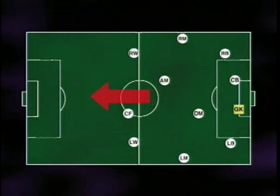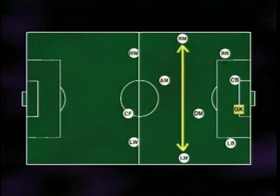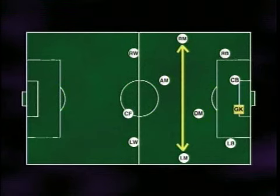As you come out of your defensive half, we're selecting in our system to have our width in midfield. There are a lot of reasons for this. One reason is we certainly want width in one of our lines to spread out the opponents so they can't concentrate and prevent us from penetrating.